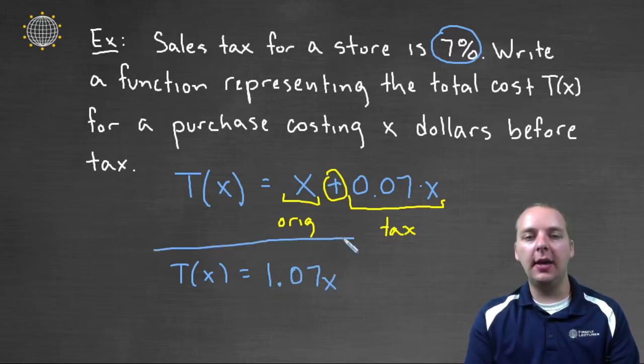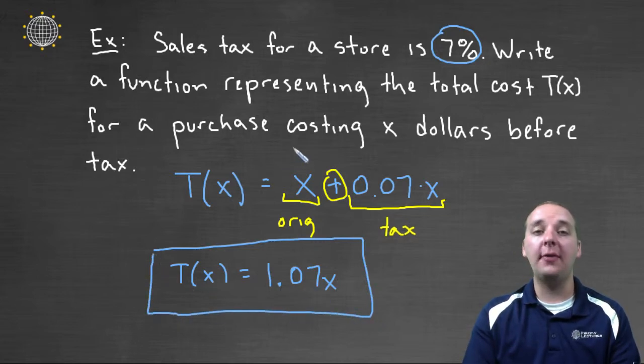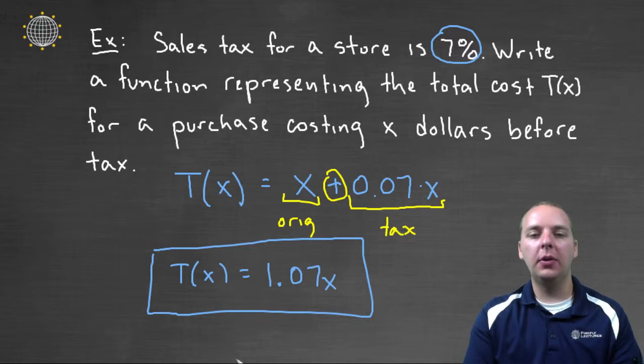And so this would be a function, and it's a linear function, that represents the total cost after tax of a purchase of X number of dollars. Now why is this a linear function though, just to be clear? Well let's take a look.